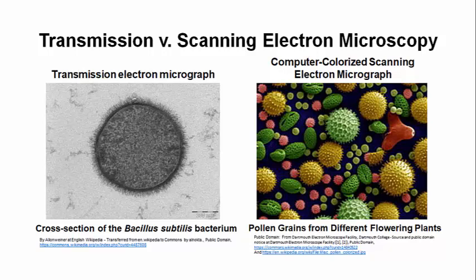There are two kinds of electron microscopy, or EM tools, for enlarging images of cells beyond the capacity of light microscopy. In transmission electron microscopy, we can get up to a million-fold magnification — 10 to the 6 times — and a resolution down to 2 nm. That's a thousand times better than light microscopy.